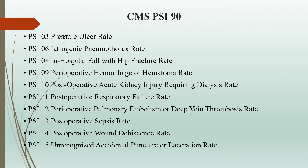CMS PSI-90 has the following component indicators: pressure ulcer rate, iatrogenic pneumothorax rate, in-hospital fall with hip fracture rate, perioperative hemorrhage or hematoma rate, postoperative acute kidney injury requiring dialysis rate, postoperative respiratory failure rate, perioperative pulmonary embolism or deep vein thrombosis rate, postoperative sepsis rate, postoperative wound dehiscence rate, and unrecognized accidental puncture or laceration rate.